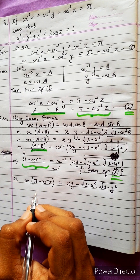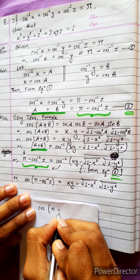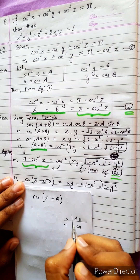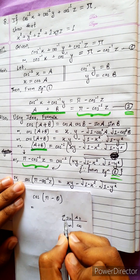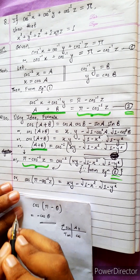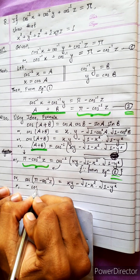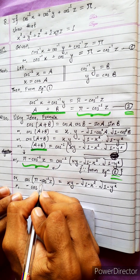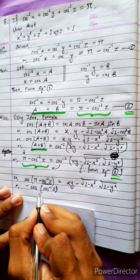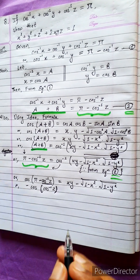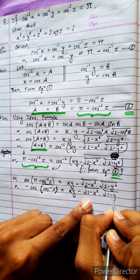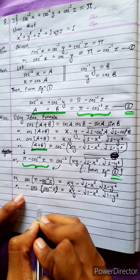Using the identity cos(π − θ) = −cos θ: here cos(π − cos⁻¹z) becomes −cos(cos⁻¹z) = −z. So −z = x·y − √(1 − x²)·√(1 − y²), and cos and cos⁻¹ cancel each other.